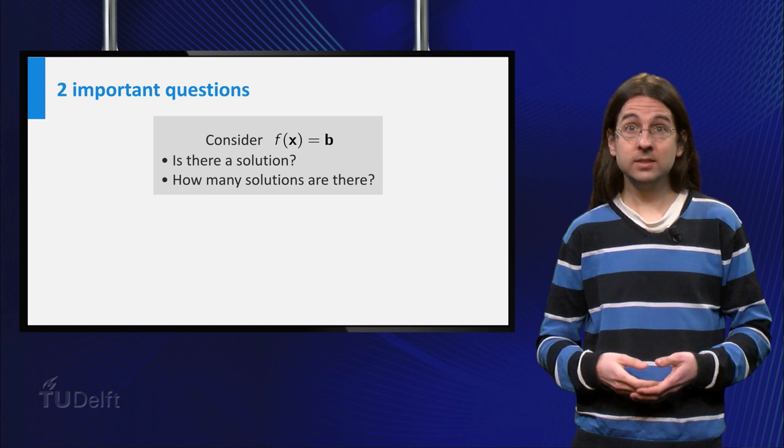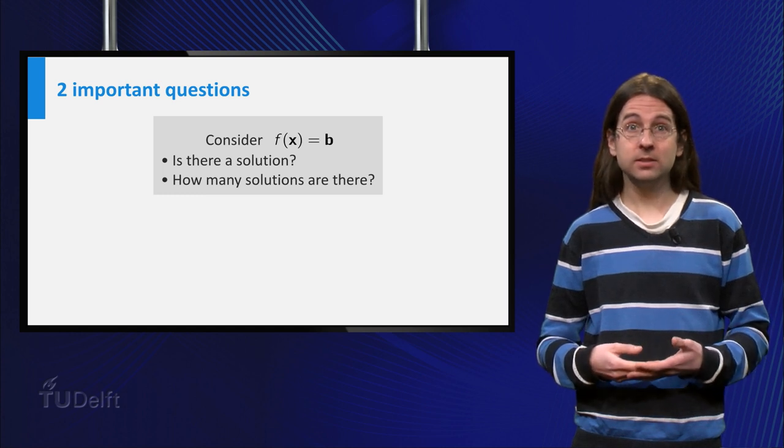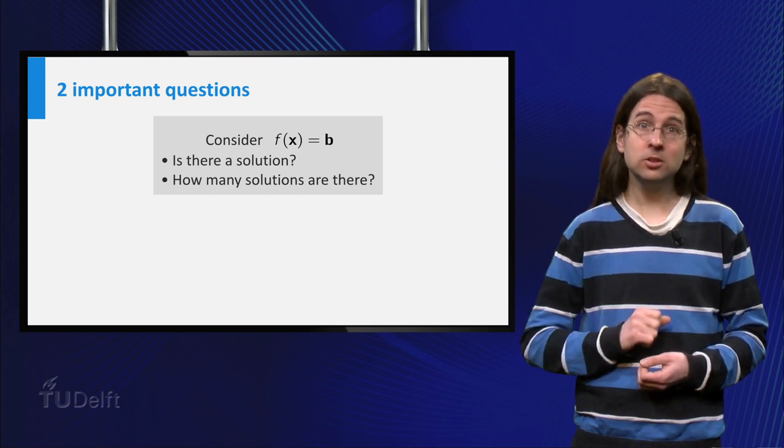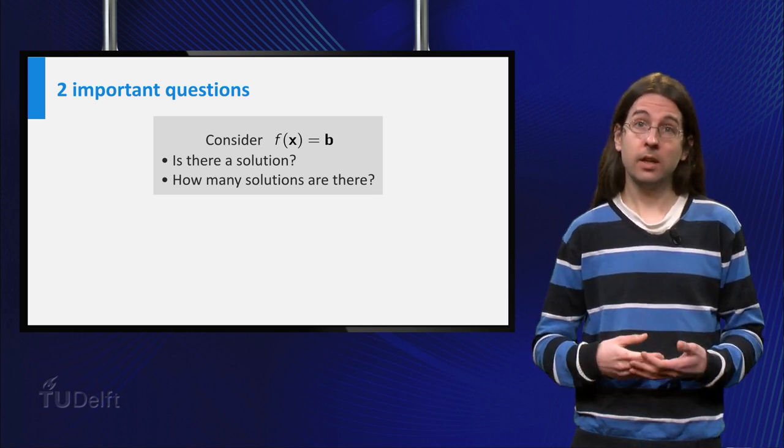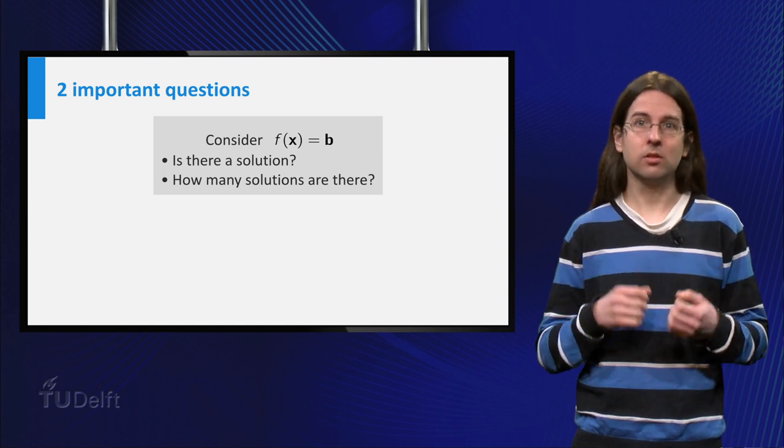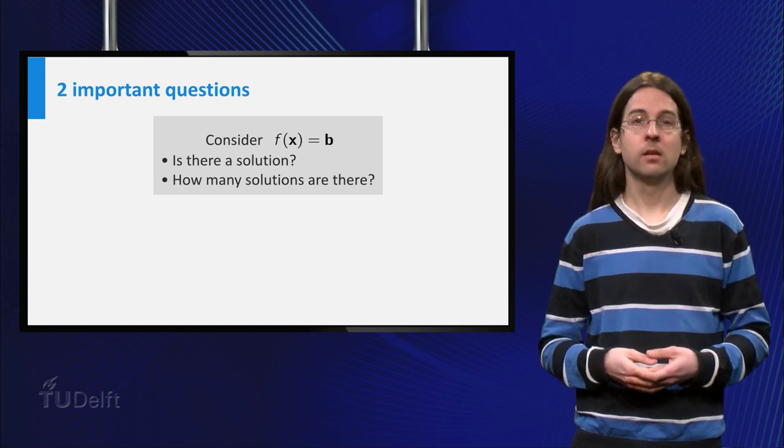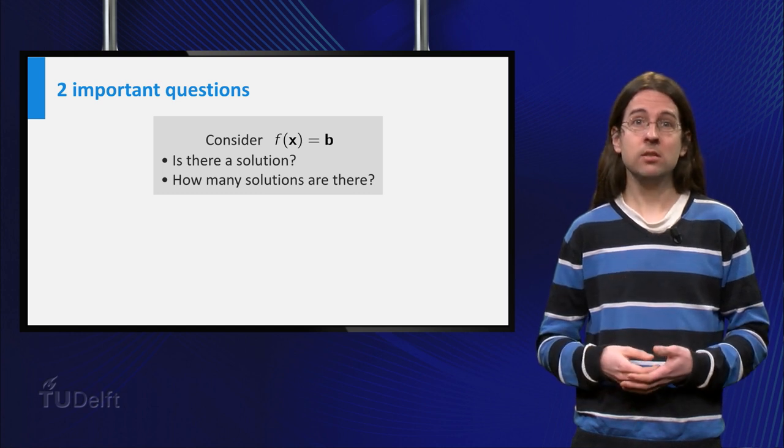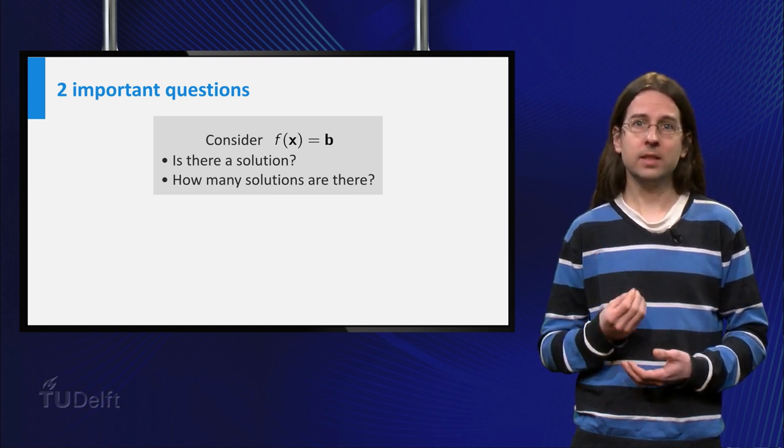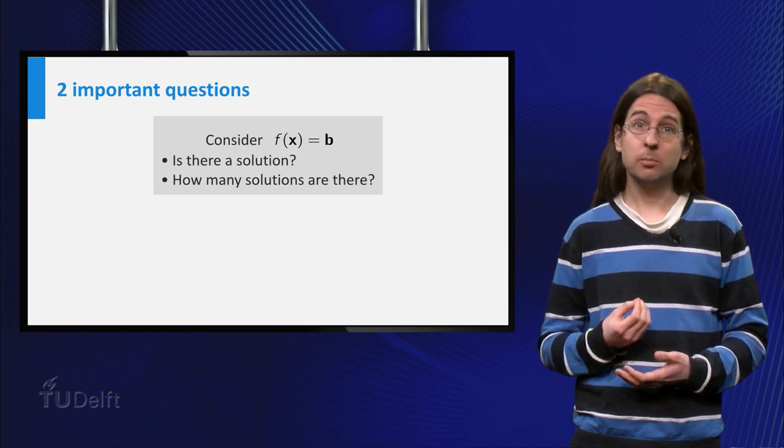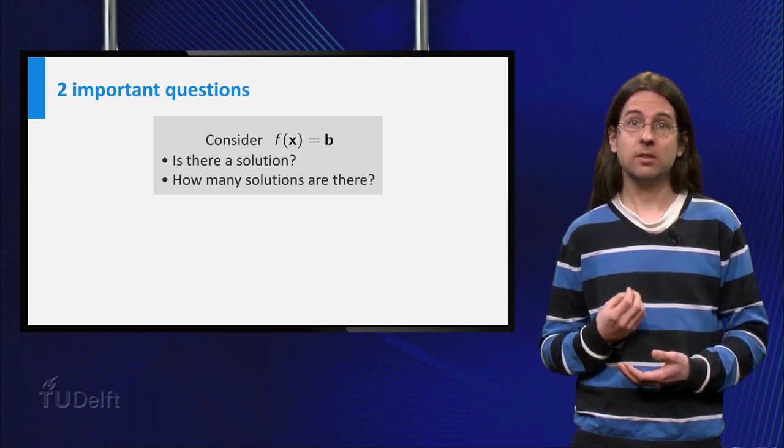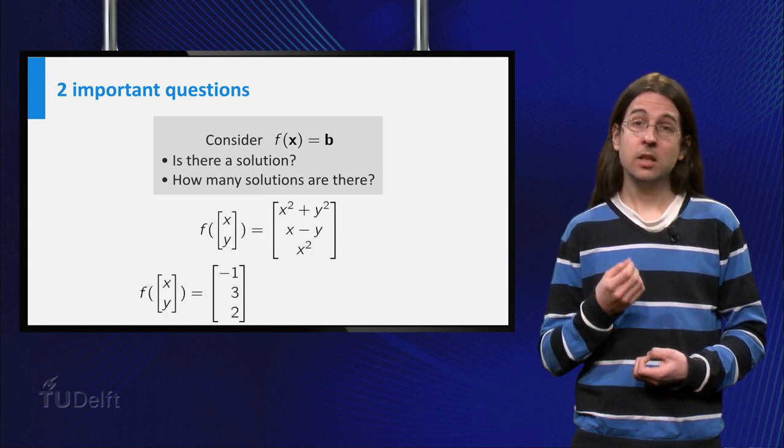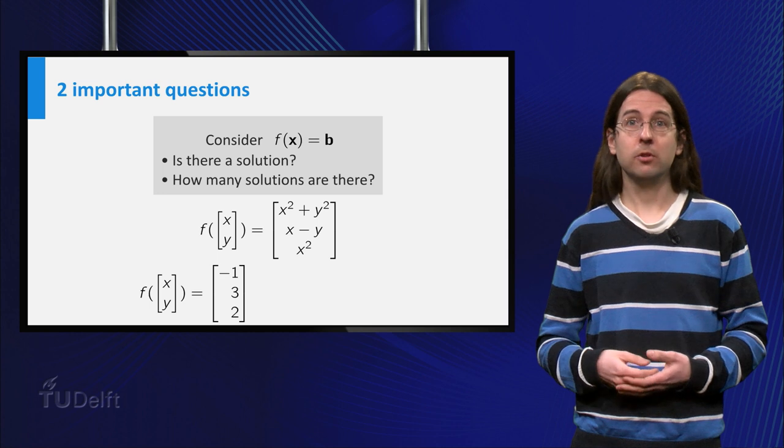In the context of systems of linear equations, we considered the important questions: Are there solutions to this system? And how many solutions are there? We can now ask the same questions for an equation of the form f(x) = b. For example, we can consider whether there are solutions to the equation f(x,y) = (-1, 3, 2).